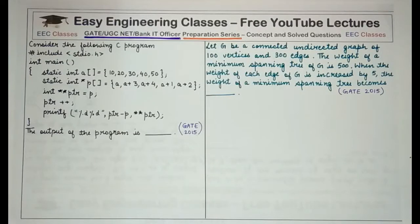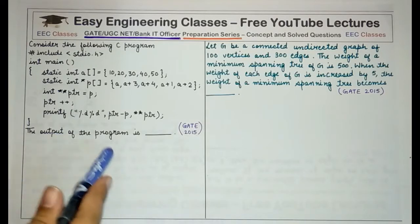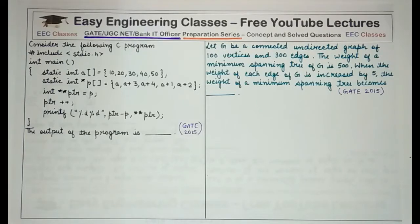Hello everyone, welcome to the preparation series of GATE Computer Science, UGC Net Computer Science and Bank IT Officer exam which is brought to you by Easy Engineering Classes. So in today's lecture, we'll solve two questions from GATE 2015 paper and these questions are based on minimum spanning tree.